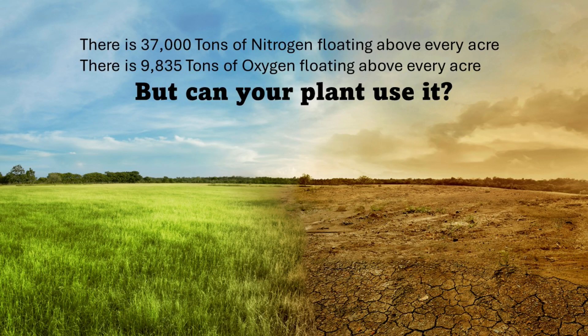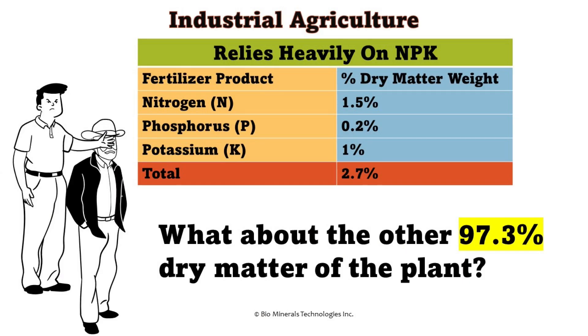There is 37,000 tons of nitrogen floating above every acre, and almost 10,000 tons of oxygen above every acre. But can your plant use it? Conventional agriculture wants to tell us that it's all about NPK. But honestly, where's the other 97.3 percent of your plant's dry matter weight coming from, and how do we manage for it?